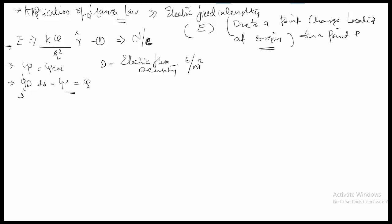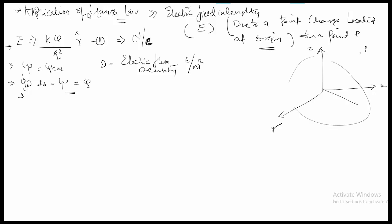Now suppose I have a charge distribution located at a point P. I will assume a Gaussian surface which is a sphere. When solving any problem, you first have to assume a Gaussian surface. The charge Q1 is a point charge located here, and I need to find the electric field intensity at point P, which is located along the boundary of the Gaussian surface, which is a sphere.